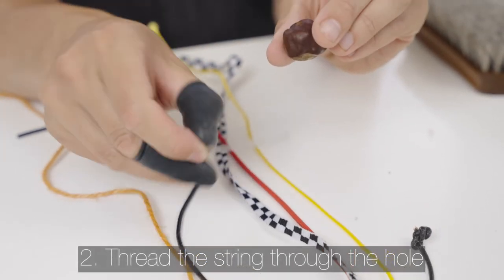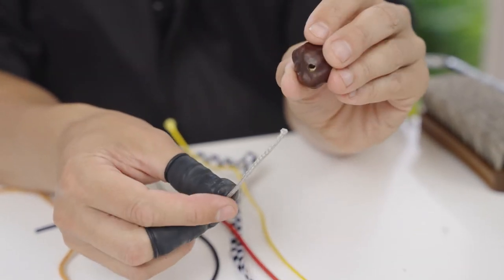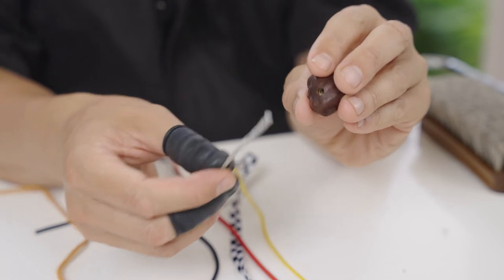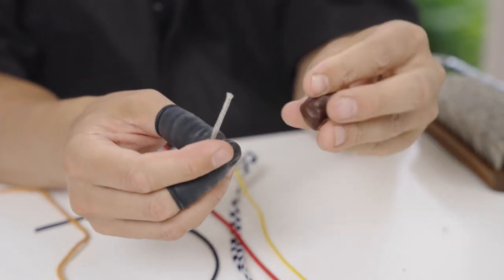Step 2: Thread the string through the hole. Secrets to success here include make sure your conker hole is clean and clear. Make sure the string end isn't frayed.